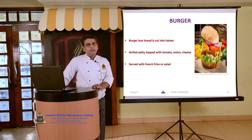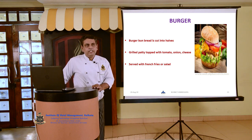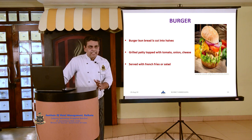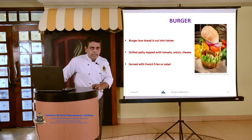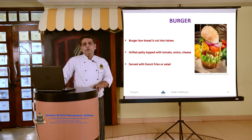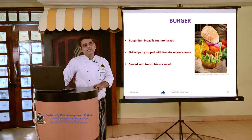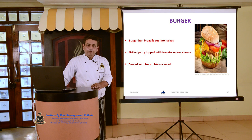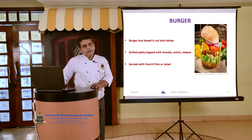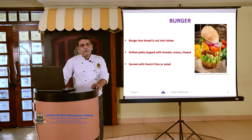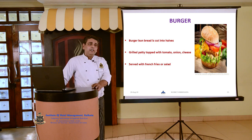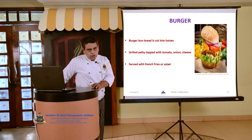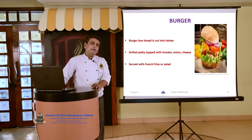The first one is burger, one of the most famous sandwiches. A burger bun is cut into halves, toasted or grilled, and filled with a grilled patty topped with tomato, onion, and cheese. The patty may be non-veg or veg. If a chicken patty is used, it becomes a chicken burger; if a veg patty is used, it becomes a veg burger. It is served with French fries, various kinds of tossed salad, and accompaniments such as mustard sauce or tartar sauce.